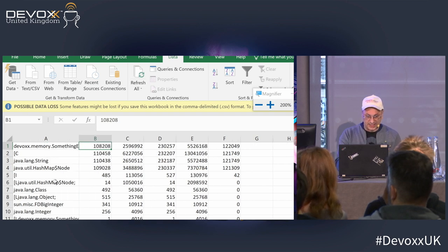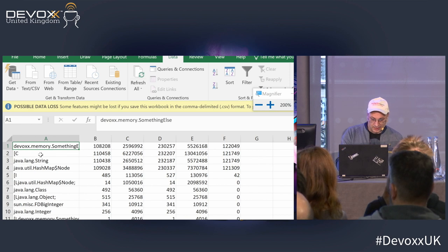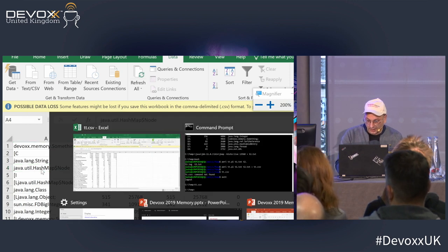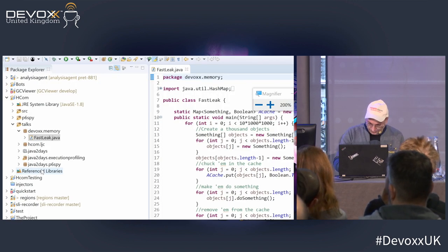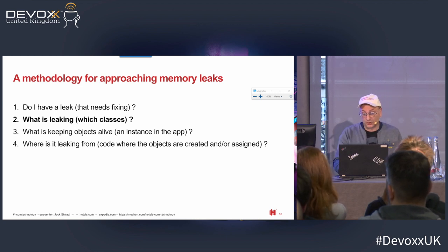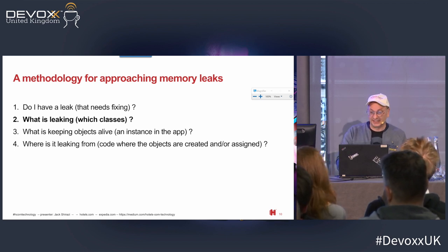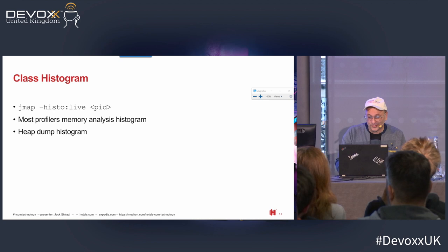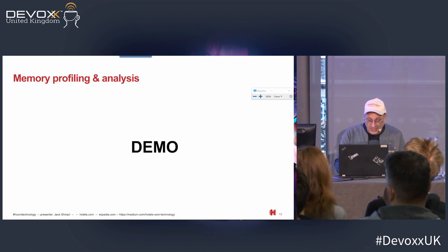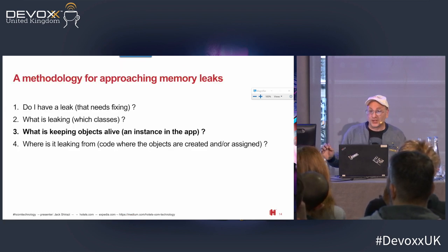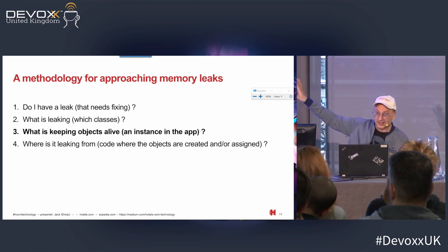What I'm seeing is that I've got SomethingElse objects, some char arrays, some Strings. So I've answered the question: what is leaking — which classes. I've got four classes that I know are leaking and they're obviously linked in some way. That answered the second question. The next question I'm asking is: we've answered do I have a leak, yes; what is leaking, I found the classes very straightforwardly through the histograms. Now, what is keeping them alive?